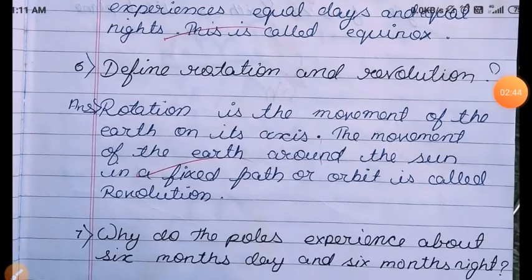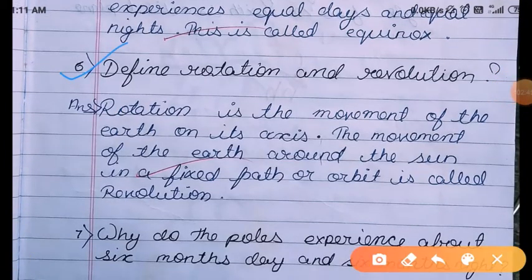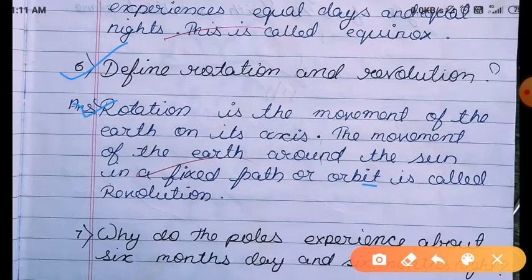Question Number 6: Define rotation and revolution. Rotation is the movement of Earth on its axis. The movement of Earth around the sun in a fixed path or orbit is called revolution.